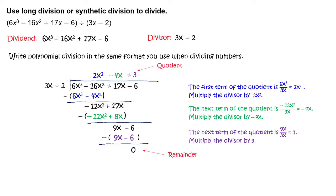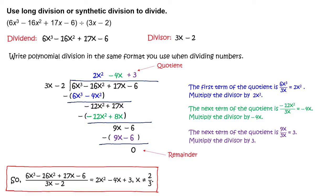The quotient is 2x squared minus 4x plus 3 and the remainder is 0. So you can write the quantity 6x cubed minus 16x squared plus 17x minus 6 divided by the quantity 3x minus 2 equals 2x squared minus 4x plus 3. Note that because the original expression has the term 3x minus 2 in the denominator, x cannot equal 2 thirds.